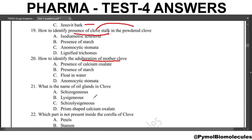Next question: how to identify the adulterant of mother clove? The answer is presence of starch. Next question: what is the name of oil glands in clove? The answer is schizolysigenous.